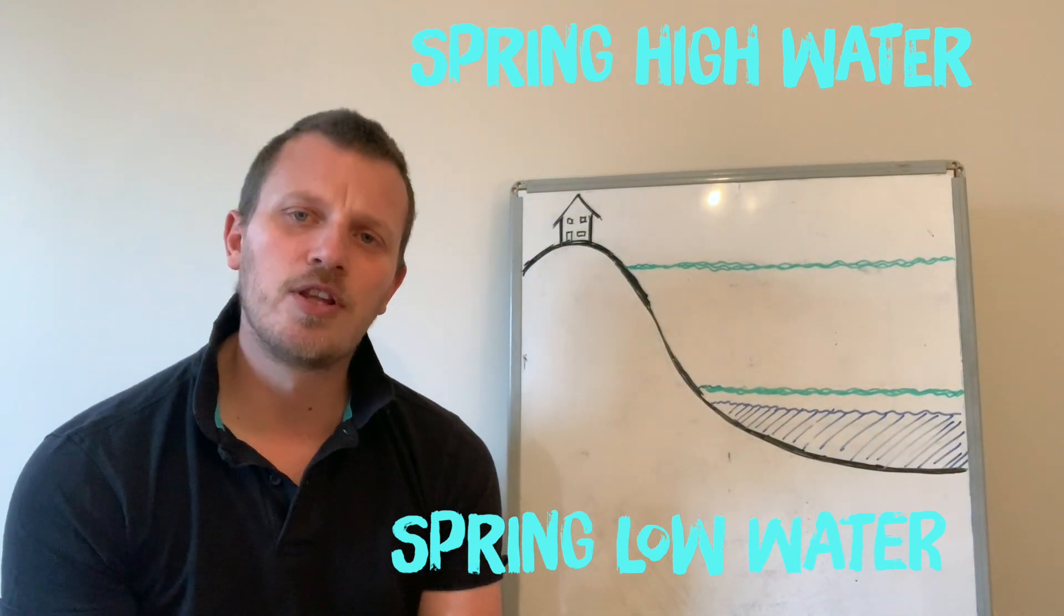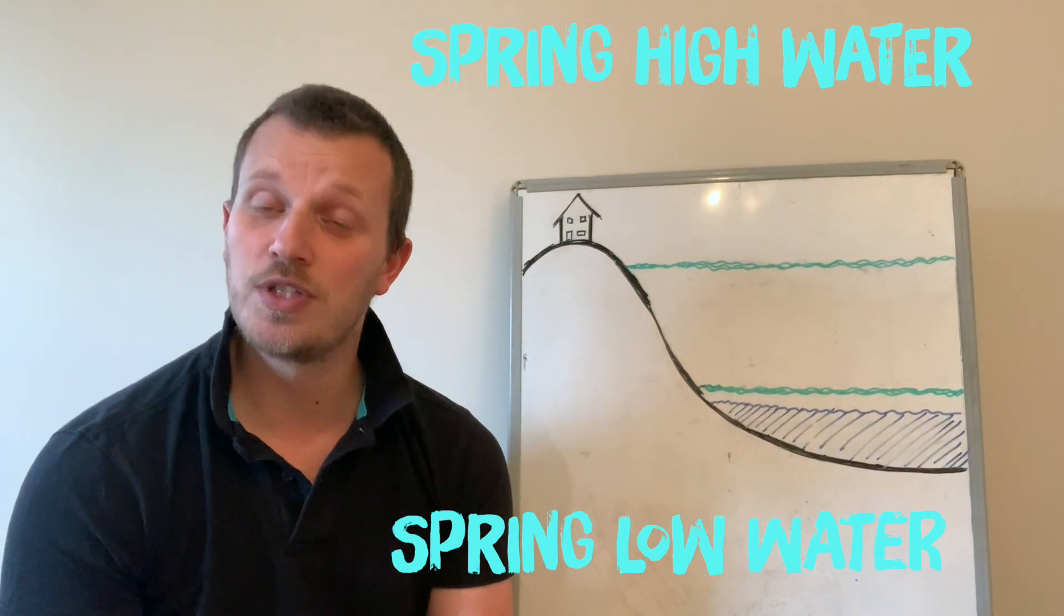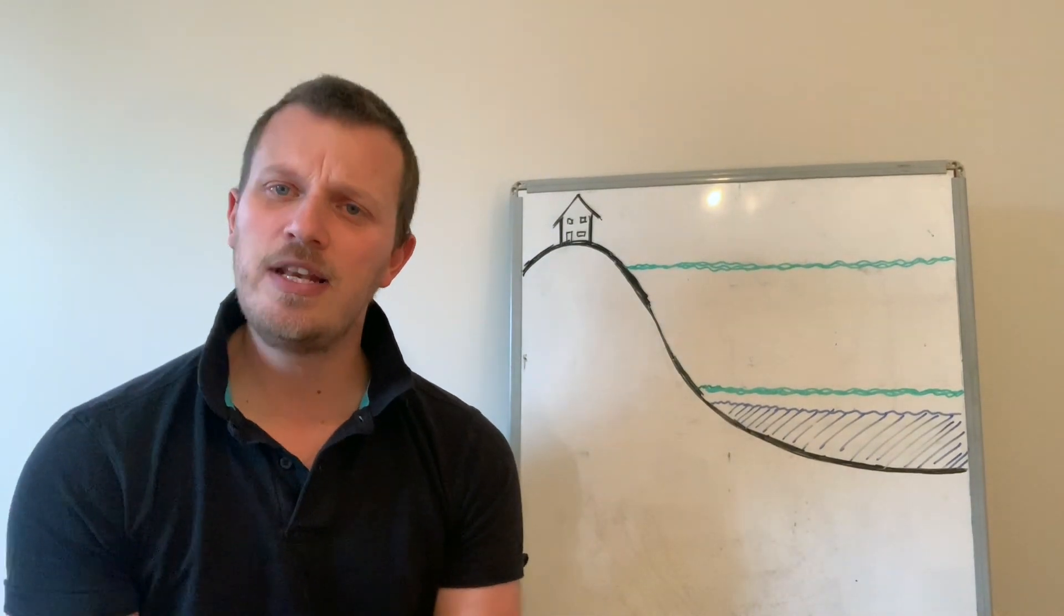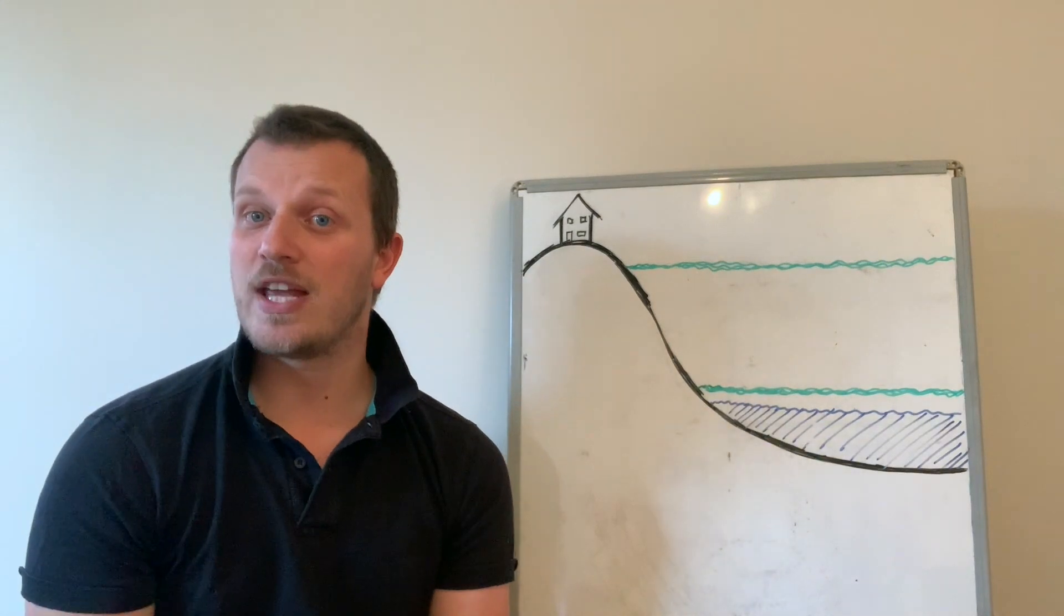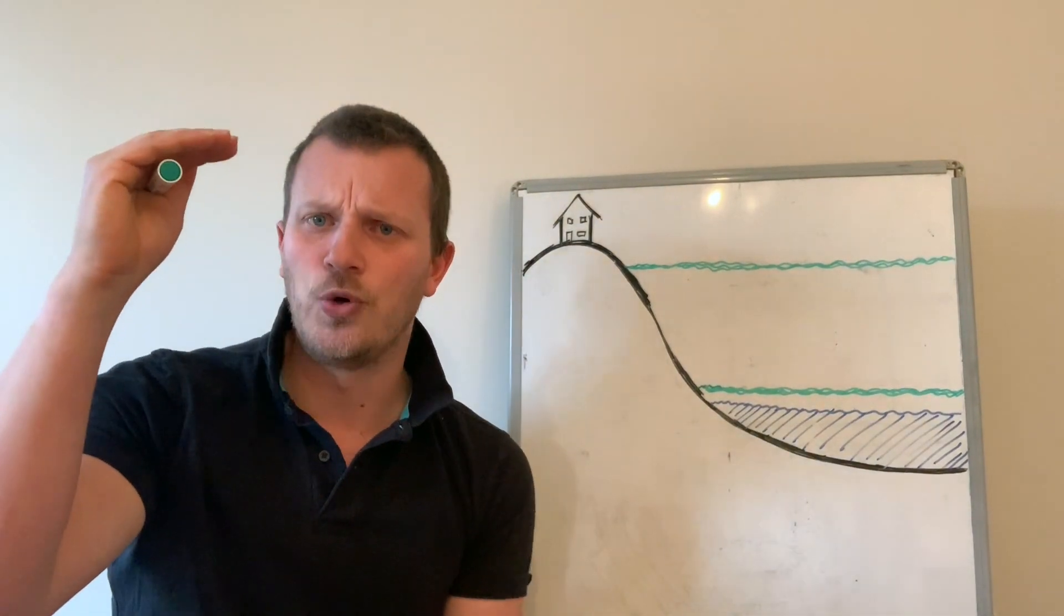There's another type of tide that we might need to know about, and that's called a neap tide. Now a neap tide is sort of the opposite to a spring. So instead of getting a really high, high water, it's not that high.